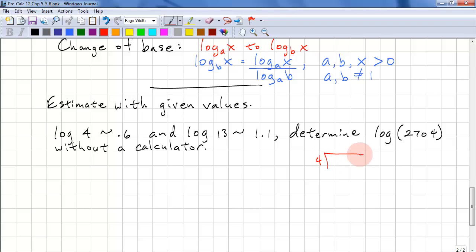We do 4 divided into 2,704. This is 676. This can be divided by 4 again. 676 divided by 4 gives us 169. 169 equals 13 squared. We know there's no 4s left in here because this is an odd number. Therefore, log 2,704 must equal log 4 squared and 13 squared.